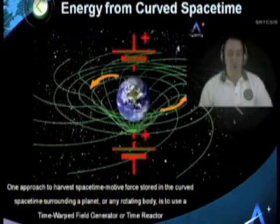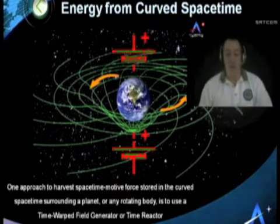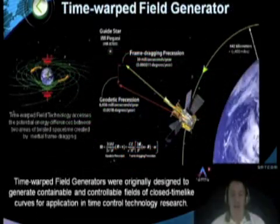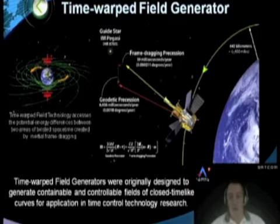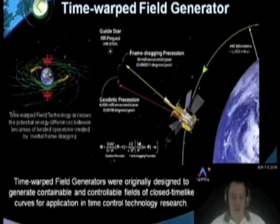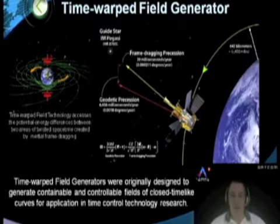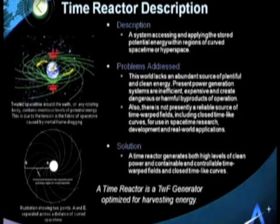Harvesting space-time motive force stored in the naturally occurring curved space-time around our planet could be a possible solution for the future. The tools used to do that would be a time warp field generator, or what's called today a time reactor. Time warp field generators were originally designed to generate containable and controllable fields of closed time-like curves for use in physics research. The concept was discovered during high-speed space-based navigation models where a new relationship between space-time and energy surfaced. It wasn't until the third generation of time warp field generator that we realized it had the potential to harvest energy.